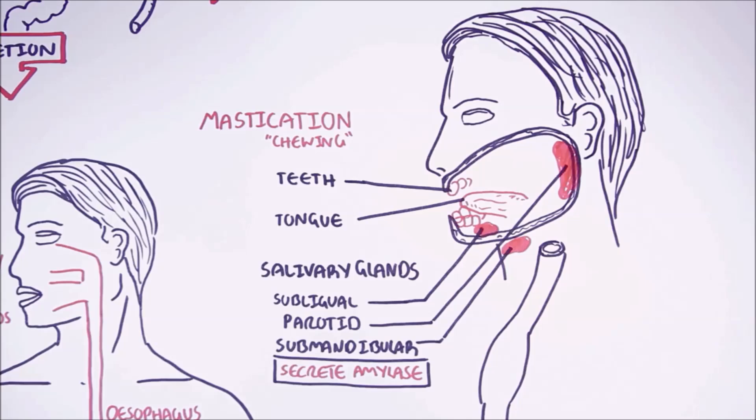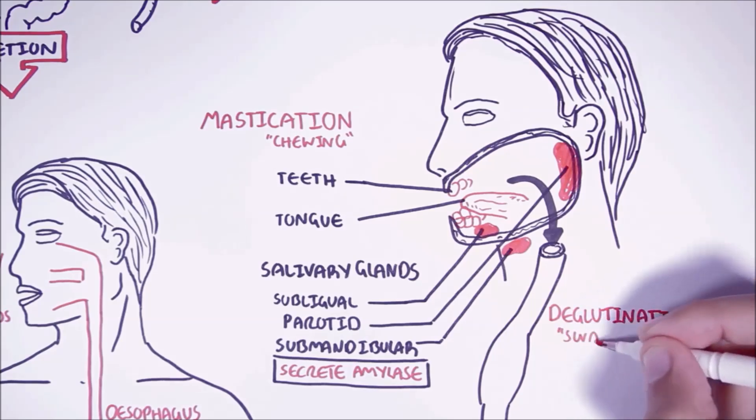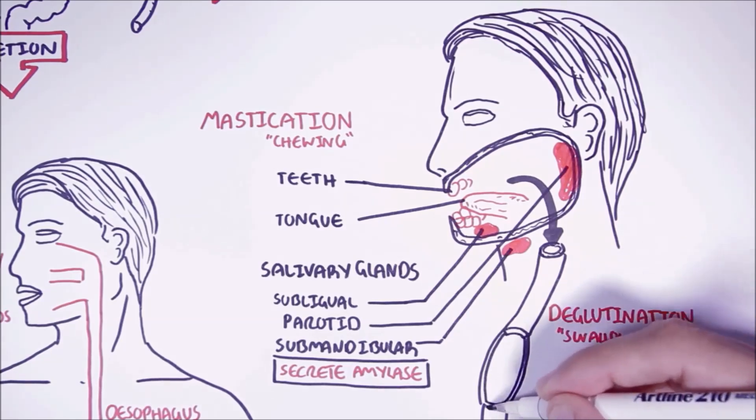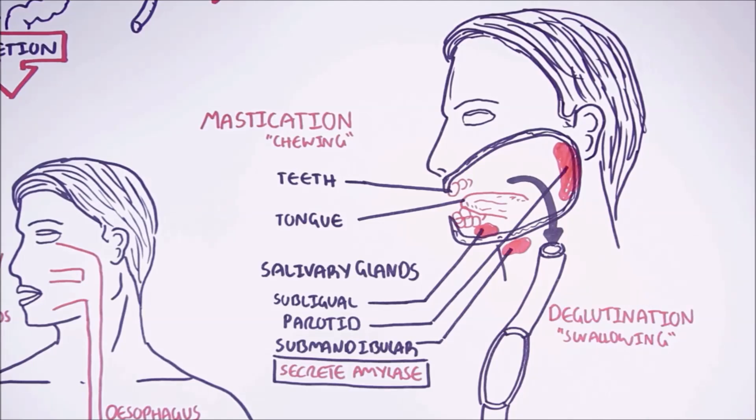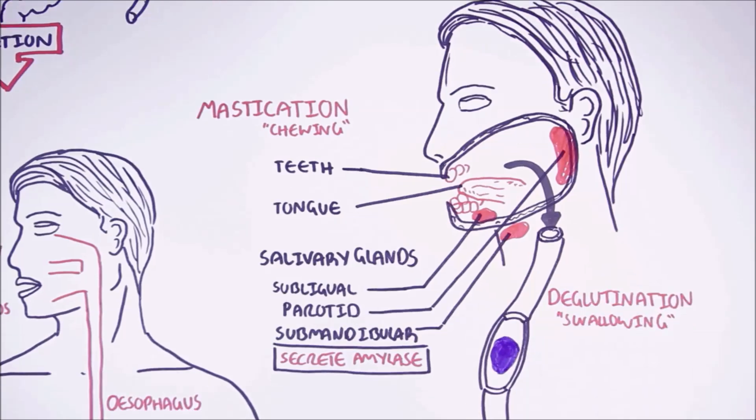Once the food leaves the oral cavity in a partially digested form, it is swallowed, a term called deglutition. The food is now referred to as a bolus. The bolus, which means bol in Latin, is a mass of food that has been chewed up.